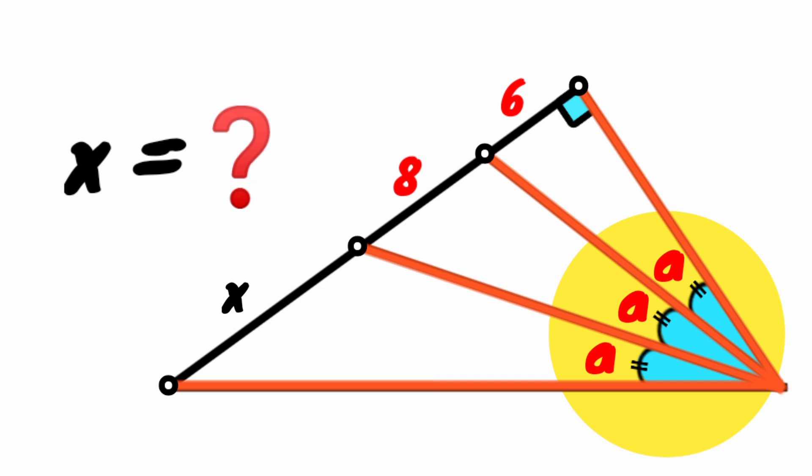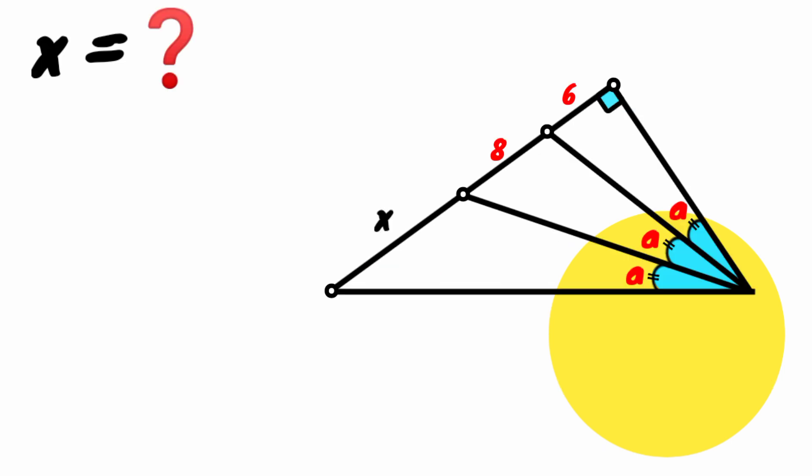So how can we solve this? How can we calculate the length of this line segment x? The first thing we'll do is label all the vertices: say P, Q, R, S, and T.